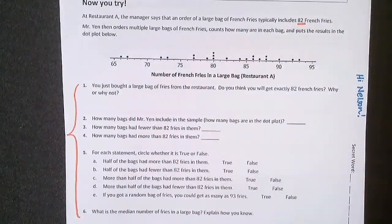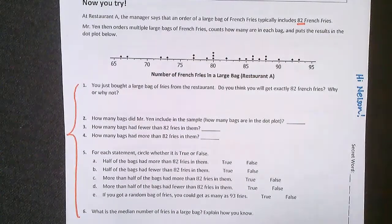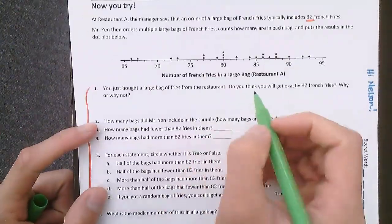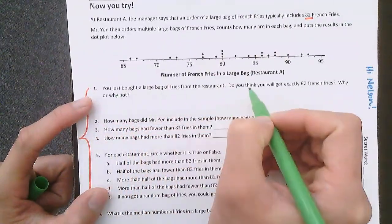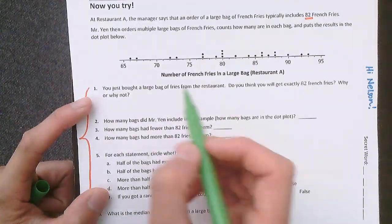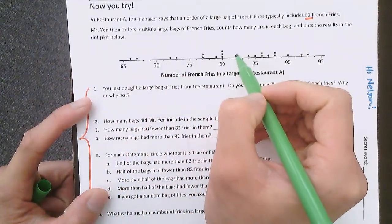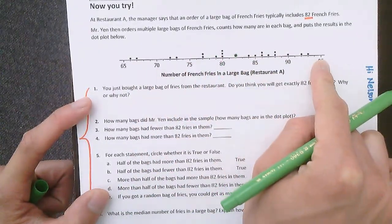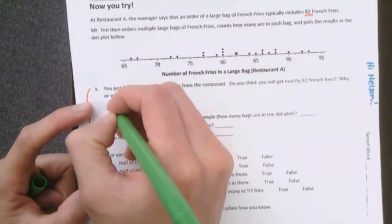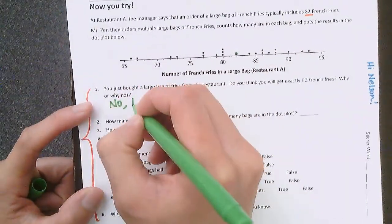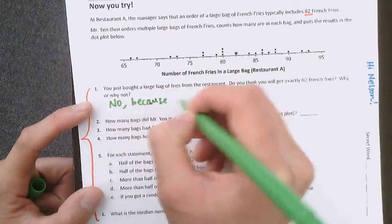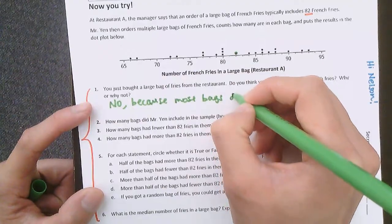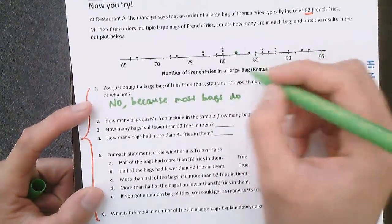And now you are resuming the video to check your work. Remember, if you're not trying on your own, you're not challenging yourself to learn. Alright, so you just bought a bag, and then do you think there will be exactly 82 french fries? Well, as you can see, one bag had 82, but all of these other bags did not have 82. So I don't think you can expect to have exactly 82, so no, because most bags do not have 82. They usually have more or less than 82.